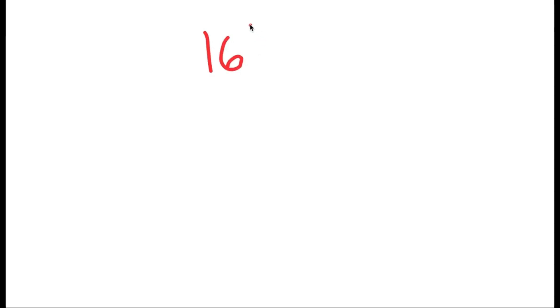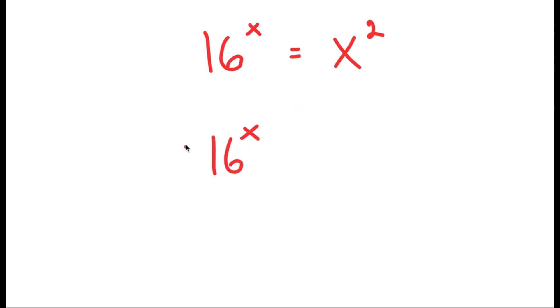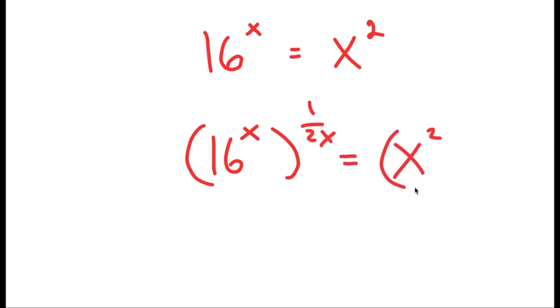In this video, I'm going to solve the equation 16 to the power of x is equal to x to the power of 2. To solve this, I'm going to first start by taking the power of 1 over 2x on both sides. So I get 16 to the power of x to the power of 1 over 2x is equal to x to the power of 2 to the power of 1 over 2x.